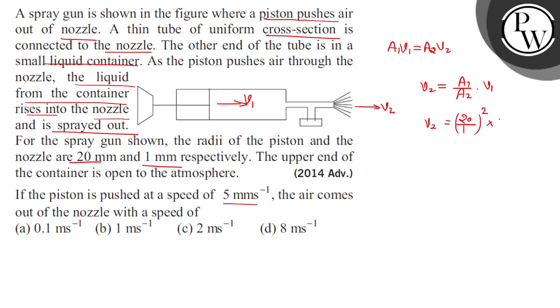whole squared into 5 mm per second. So 400 into 5 into 10 raised to minus 3 meter per second - converting mm to meter per second - this becomes 2000, that means 2 meter per second.